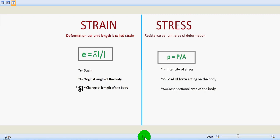And what is stress? The resistance per unit area of deformation is called stress. That is explained as p equals capital P by A. Small p is the intensity of stress and capital P is the load of force acting on the body, and A is the cross-sectional area of the body. So this is the resistance offered by the body before it is undergoing or ongoing a deformation.